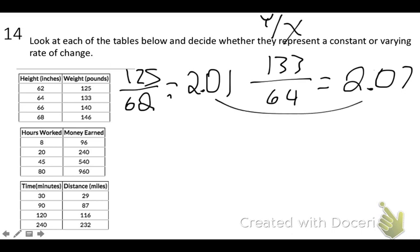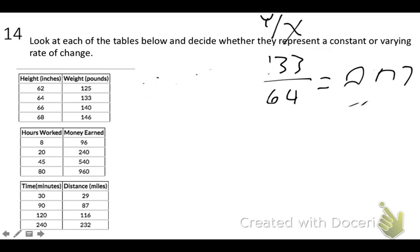Okay? These are not the same number. So already you should know that this is a varying rate of change. It changes. It's not the exact same throughout the entire table. So all you need to write for the first one is varying, or I'll just put V.